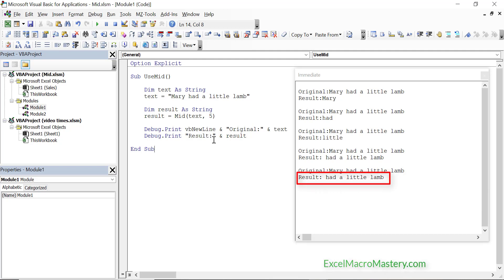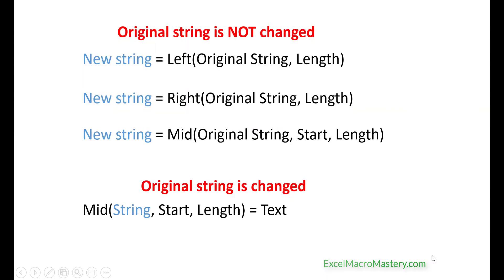At the beginning of the video I mentioned that mid has a little known feature. Well now I'm going to show you what this feature is. We can update the string using mid, whereas in the other functions we just get back what we've extracted from the string. How this works is that we specify the section of the string as normal with mid but then we assign it to a new value. The easiest way to understand this is by looking at some examples.